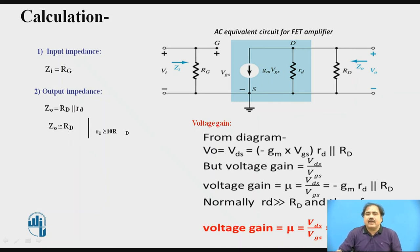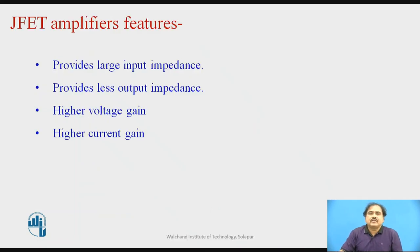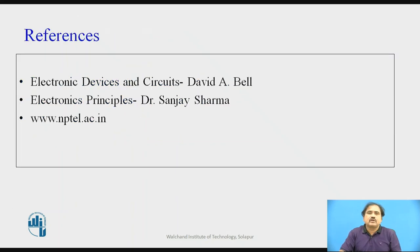In practice, the voltage gain depends simply upon the transconductance Gm of the transistor and the load value Rd. This amplifier provides high input impedance, low output impedance, very good voltage gain, and very good current gain. These are the key features of the JFET amplifier. Thank you for watching — I hope this video helps you understand some basics of FETs.